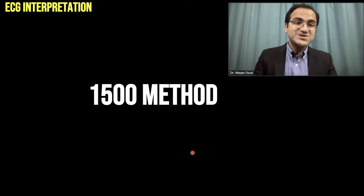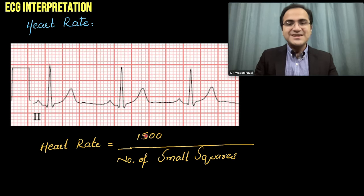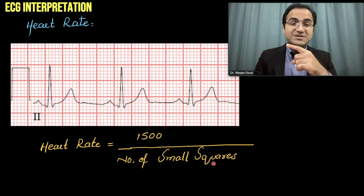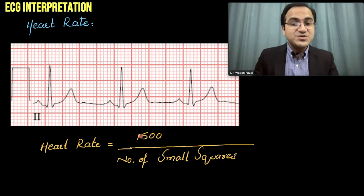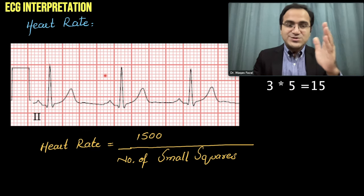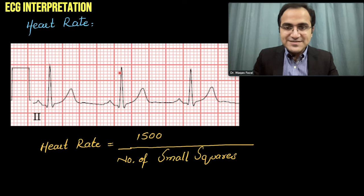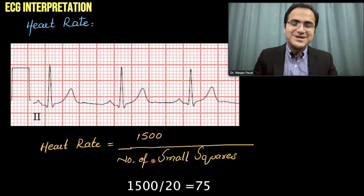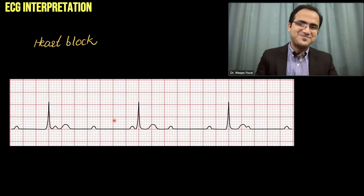The third method is the 1500 method. Instead of dividing 300 by large boxes, you divide 1500 by the number of small squares between QRS complexes. Counting the small squares: three large boxes × 5 small boxes each = 15, plus 16, 17, 18, 19, 20 small squares total. 1500 ÷ 20 = 75 beats per minute — the same ECG calculated three ways.